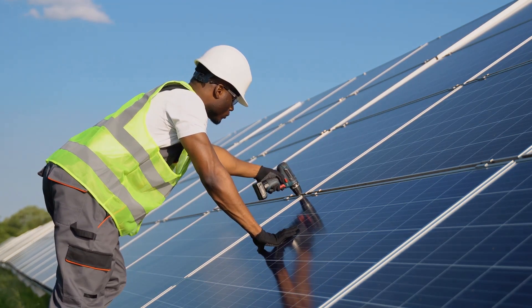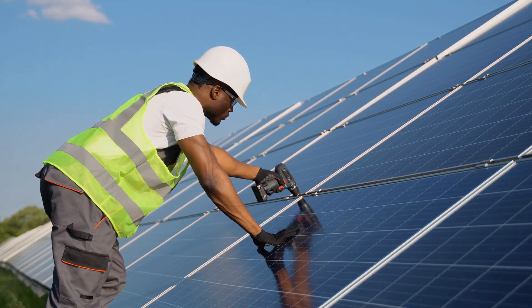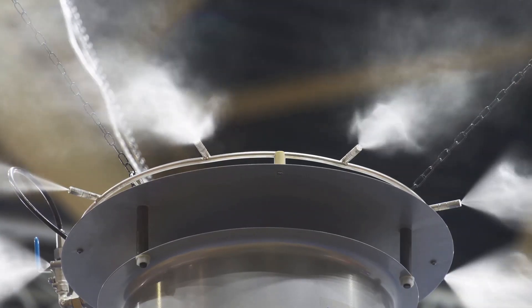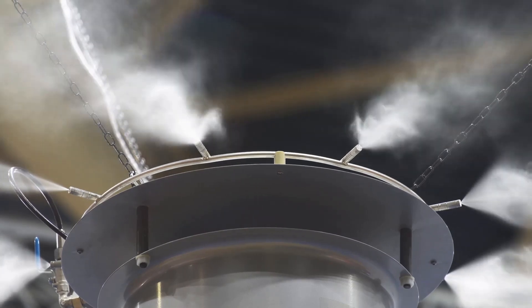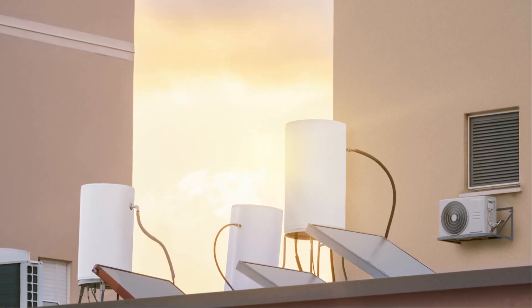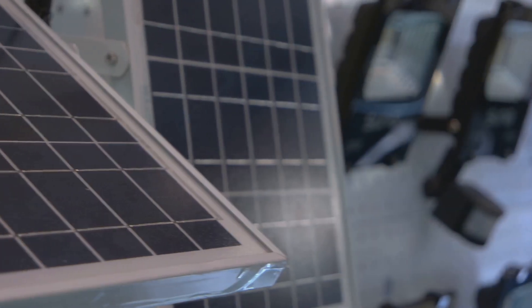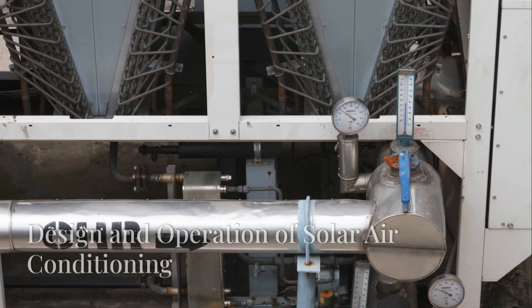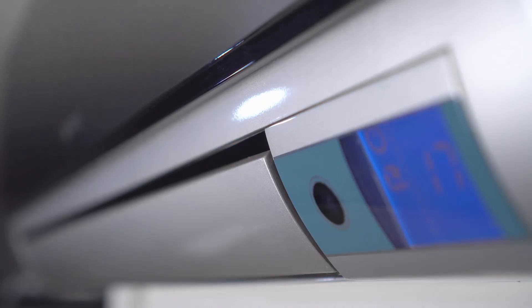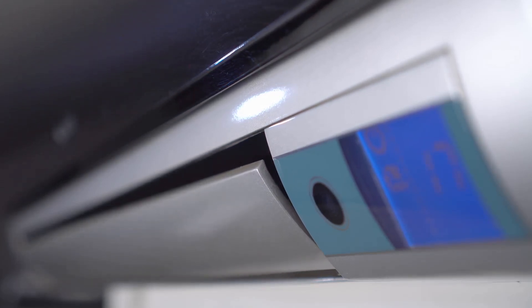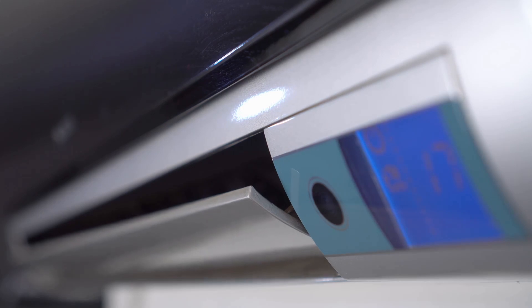As the world seeks sustainable alternatives to conventional energy sources, solar air conditioning systems have emerged as a promising solution for cooling buildings while reducing our carbon footprint. These systems harness the abundant energy of the sun to power air conditioning units, providing a clean and renewable alternative to traditional energy-intensive cooling methods. Solar air conditioning systems typically consist of four main components: solar collectors, a storage tank, an absorption chiller or desiccant system, and a conventional air distribution system.